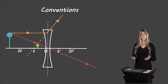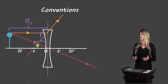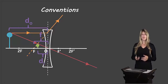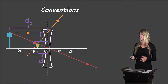Now let's look at diverging lenses. We have the same characteristics here: DO for object distance, DI for image distance, and F for focal length. These are the characteristics we'll use to describe our objects and images.